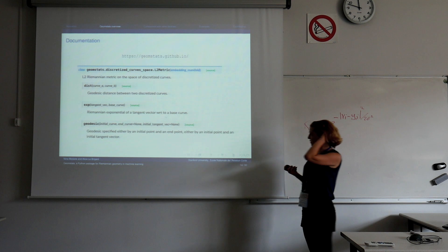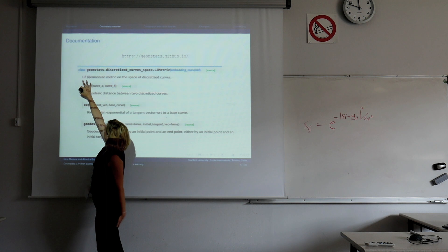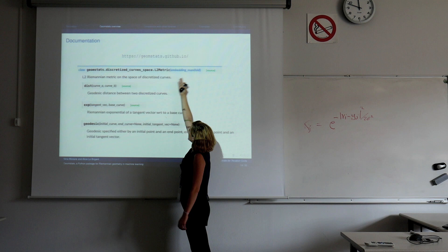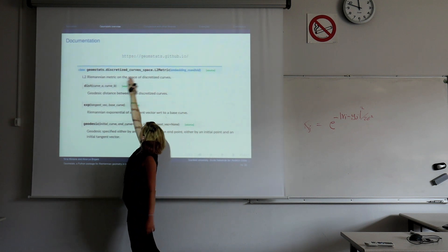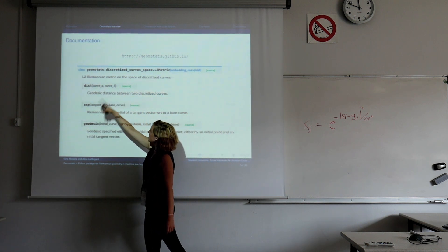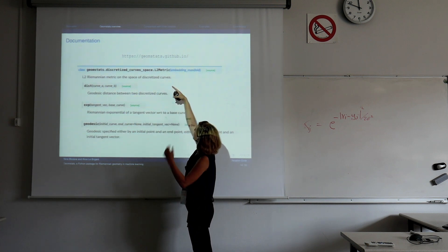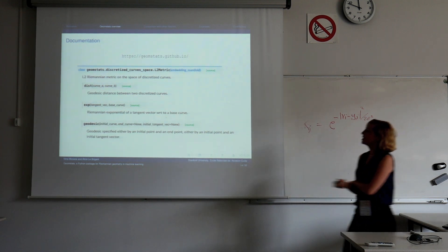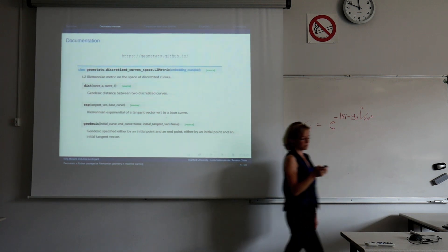If you want to take your first look at it, we have some documentation on our website. You can see the definition of all classes — for example, this is the space of discretized curves. You can see which parameters you need to give to instantiate an object of this class. If you want a discretized curve on the hypersphere, you instantiate with the appropriate embedding manifold. All the methods come with a small explanation of what they do.